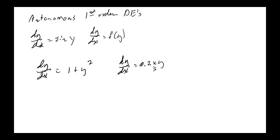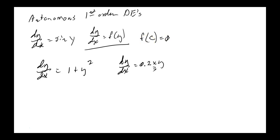The next concept is critical points. When you have dy/dx equals f(y), the zeros of f are of special importance. Where f(y) equals 0, that value c is called a critical point — where f(c) equals 0, the value c is a critical point.